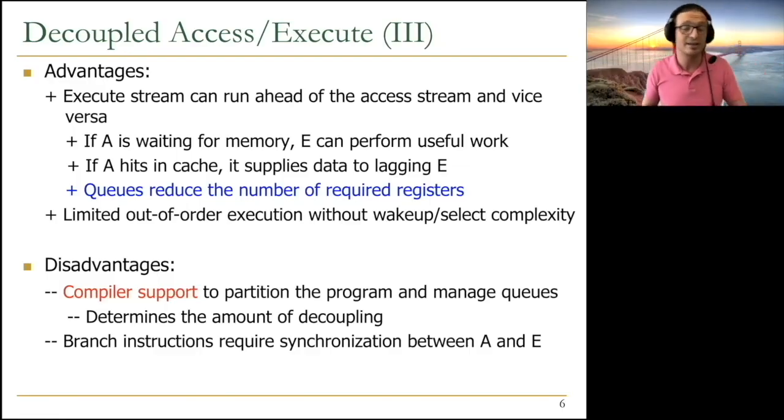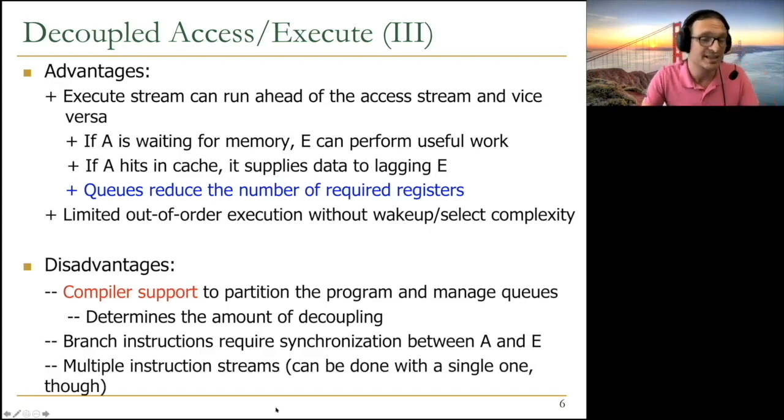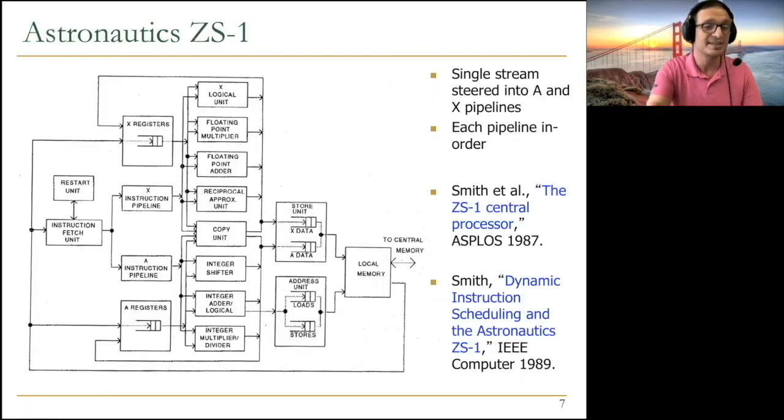Branches get executed in the execute processor, but you need to signal the access processor to make sure it's not on the wrong path forever. The other disadvantage is multiple instruction streams. You need to generate two instruction streams or program two instruction streams, which may be cumbersome. But later work showed this can be done with a single one by taking the single instruction stream and streaming it dynamically into multiple processors.